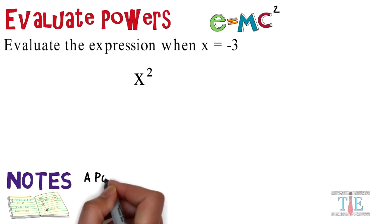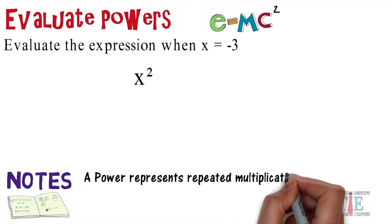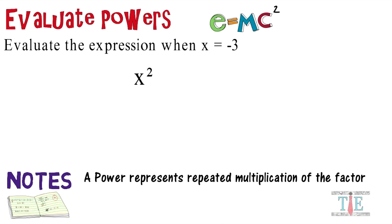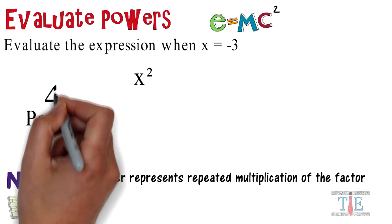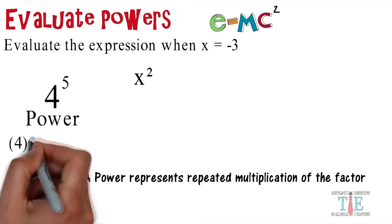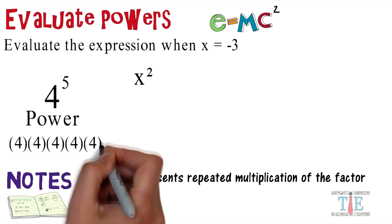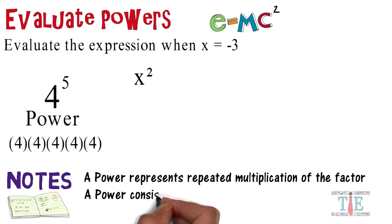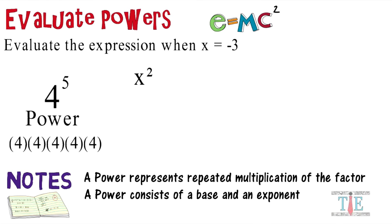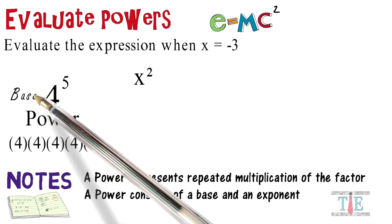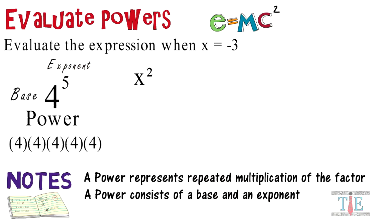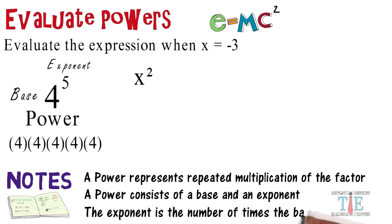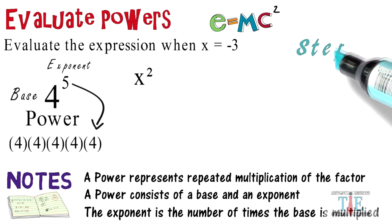A power represents repeated multiplication of the factor. For example, 4 to the 5th power is 4 times 4 times 4 times 4 times 4. A power consists of a base and an exponent — 4 is the base and 5 is the exponent. The exponent is the number of times the base is multiplied; notice 4 is multiplied by itself 5 times.